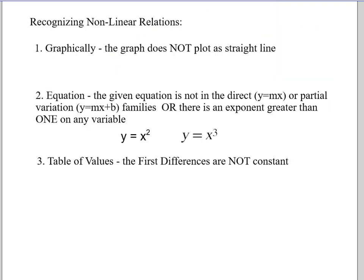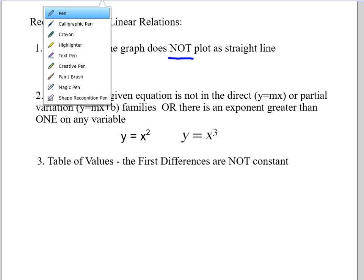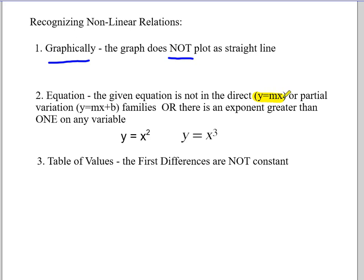So, recognizing non-linear relations — pretty straightforward, no pun intended. First, graphically: the graph does not plot as a straight line. Second, the equation: the given equation is not in direct or partial variation format. Easy ways to spot this in grade 9 — as soon as you see an exponent that's not a 1, like a squared or cubed term, you know it's non-linear. Basically, if there are any other unusual symbols, it's non-linear. Third, table of values: the first differences are not constant. In grade 10 we'll explore second differences.